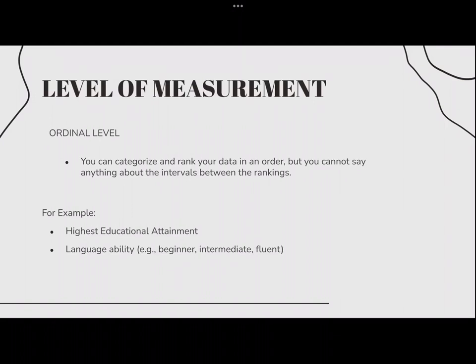Then we have the ordinal level, where you can categorize and rank your data in an order, but you cannot say anything about the intervals between the rankings. For example, highest educational attainment, and language ability — such as beginner, intermediate, or fluent.